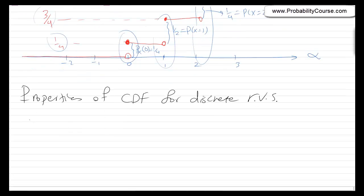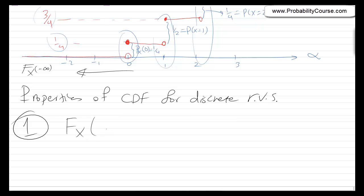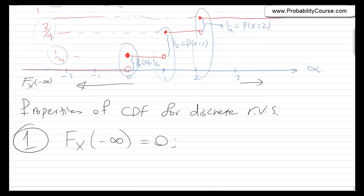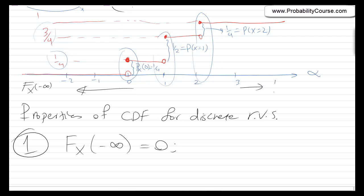Let's summarize the properties of the CDF. First, as we move to the left — Fx of minus infinity — the probability that x is less than or equal to minus infinity is zero. So Fx of minus infinity equals zero. Similarly, as you go to the right, the CDF approaches one, because the probability that x is less than or equal to infinity is one. So Fx of plus infinity equals one.